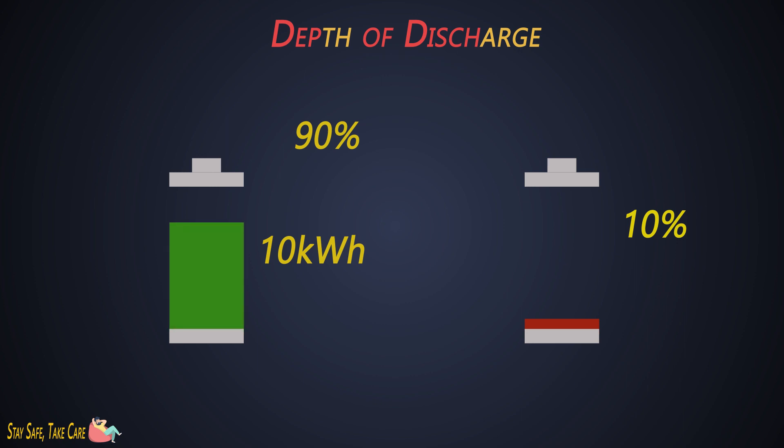Battery should never be charged 100% and should never be discharged up to 0%. This way, keeping a significant depth of discharge can increase the battery life.